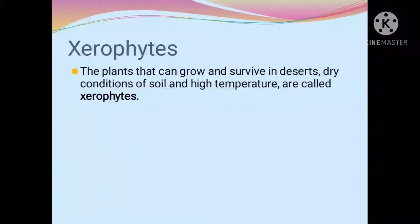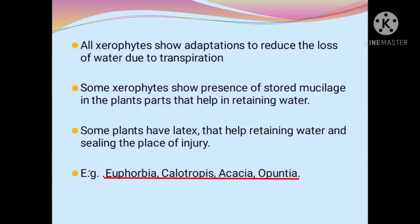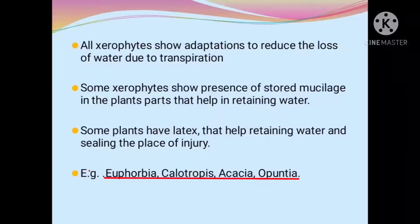The next concept is about xerophytes. Xerophytes are plants that grow and survive in desert dry conditions of soil and high temperature. In these xerophytes, they show adaptations to reduce the loss of water due to transpiration. Some xerophytes show presence of stored mucilage in the plant parts to help in retaining water. Some plants have latex that helps in retaining water and sealing the place of injury. Examples of xerophytes include euphorbia, calotropis, acacia and opuntia.